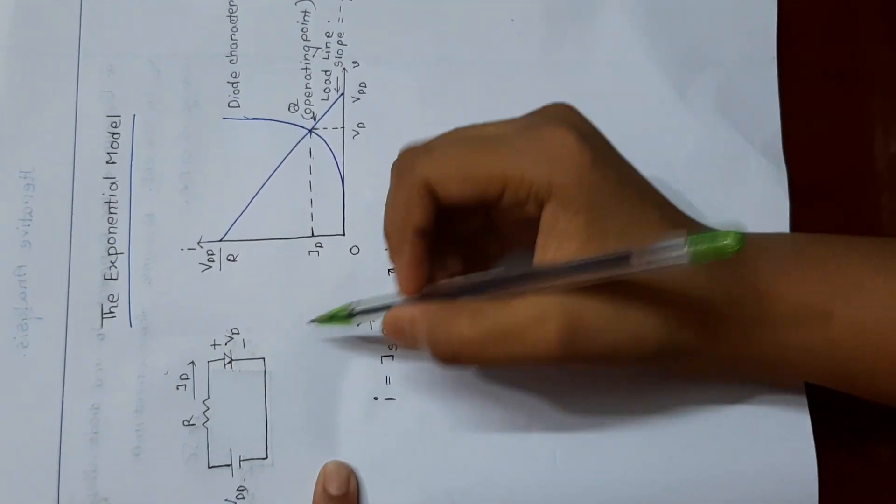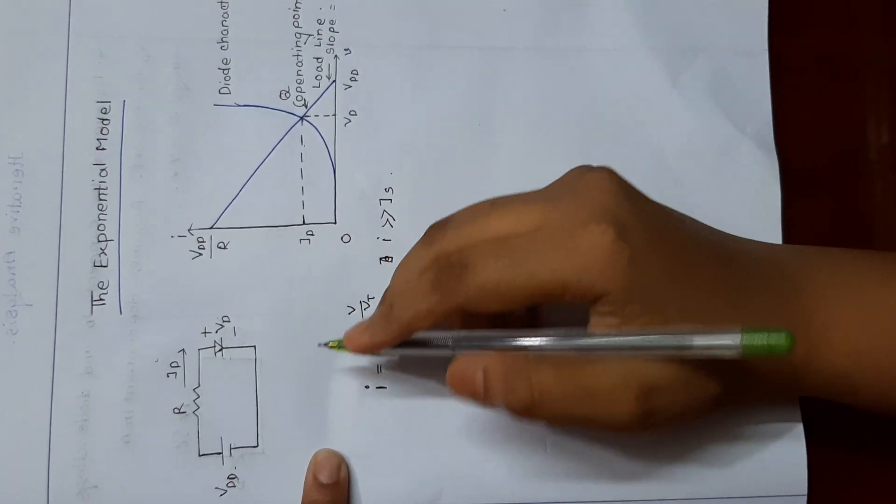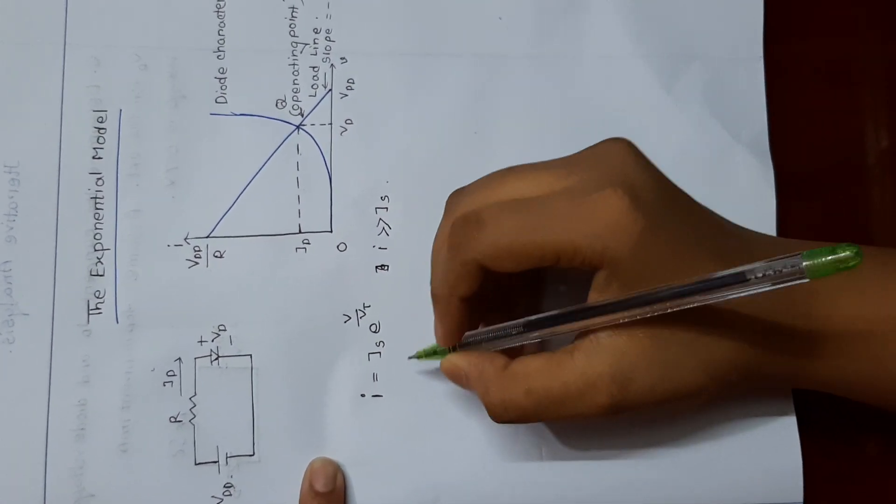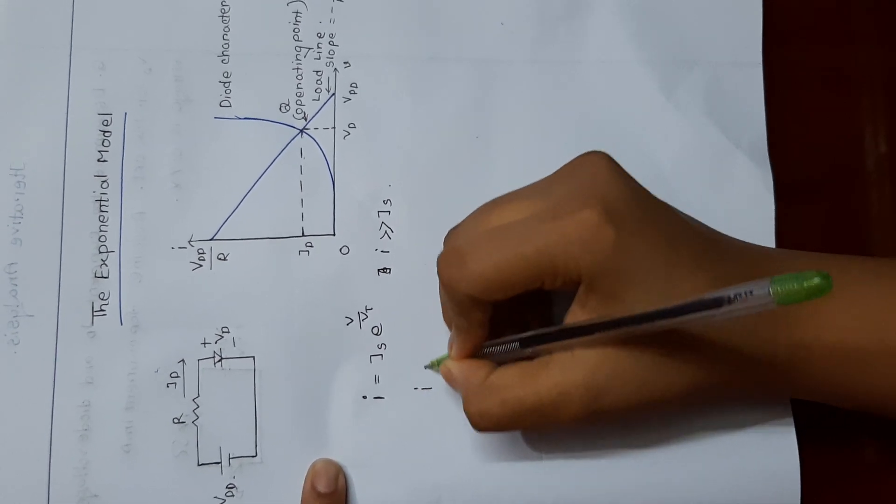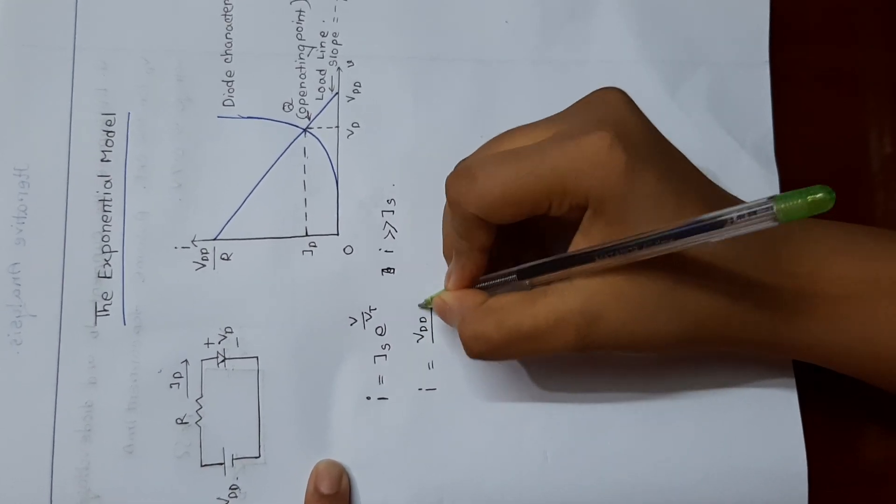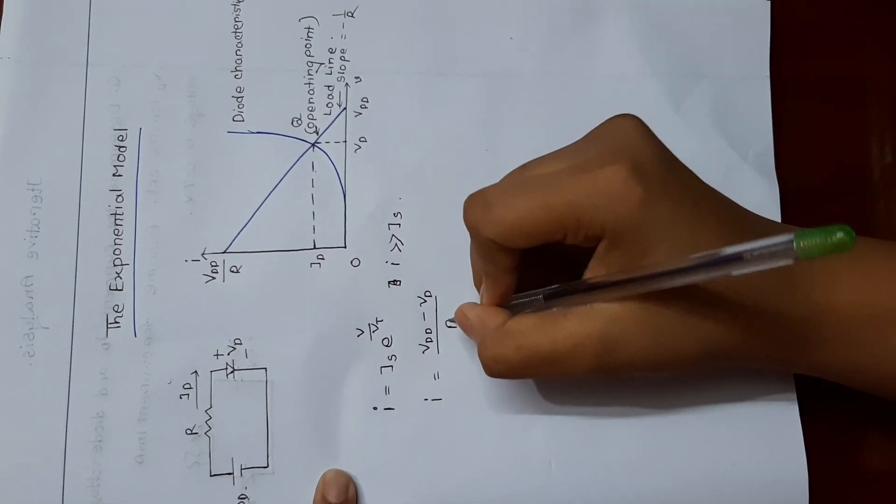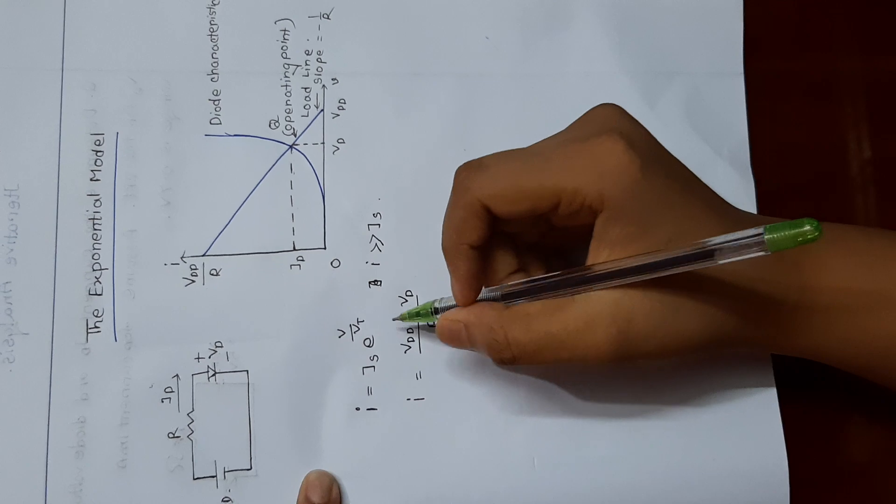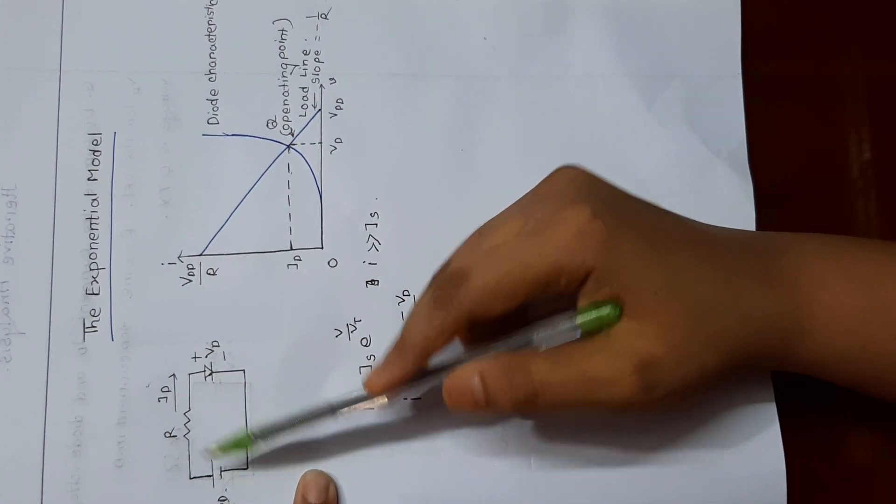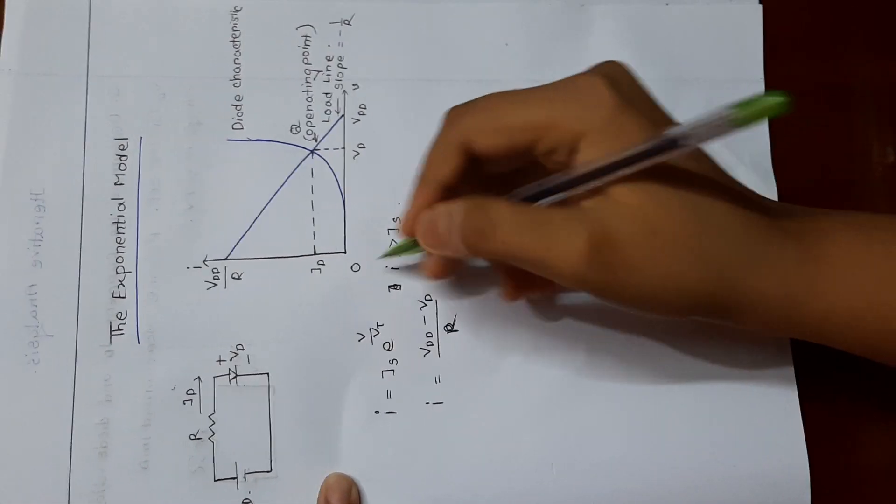And from this circuit, we can find by using KVL model, we can find that I is equal to Vdd minus Vd by R. Here, Vdd is the battery voltage, Vd is the diode voltage, and R is the resistance.